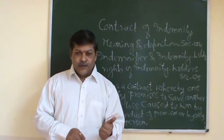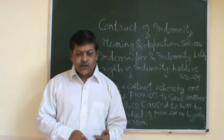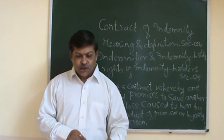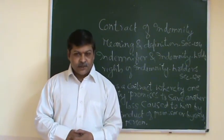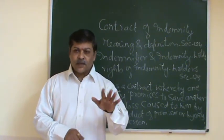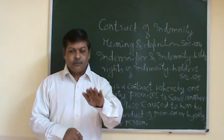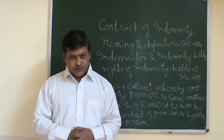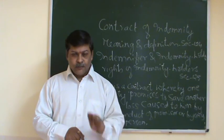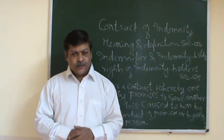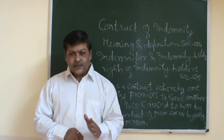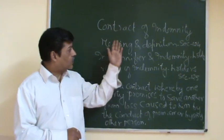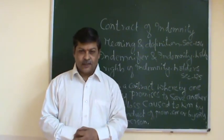The five specific contracts are: contract of indemnity, contract of guarantee, contract of bailment, contract of pledge, and contract of agency. These are the five contracts prescribed as per your syllabus. Today we are going to start with the first specific contract — contract of indemnity.